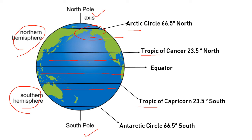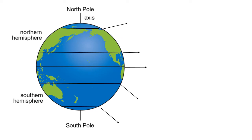The Antarctic Circle is a line of latitude that circles the globe at approximately 66.5 degrees south of the equator. Antarctica is a very cold, icy, and dry land — people don't live there because of the harsh climate.